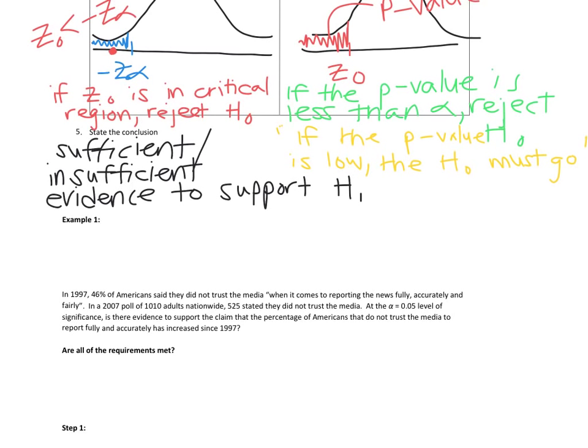Let's look at an example with real numbers. In 1997, 46% of Americans said they did not trust the media when it comes to reporting the news fully and accurately. In a 2007 poll, 1,010 adults nationwide were surveyed; 525 said they did not trust the media. At the alpha equals 0.05 level of significance — right off the bat, that tells us we are doing a hypothesis test — is there evidence to support the claim that the percentage of Americans that do not trust the media to report fully and accurately has increased since 1997?